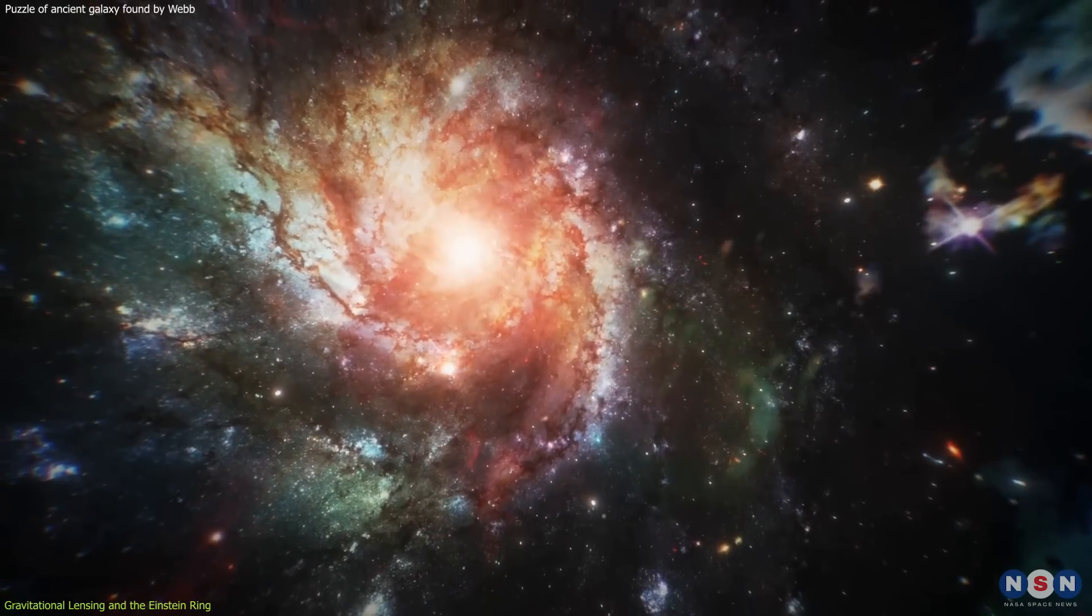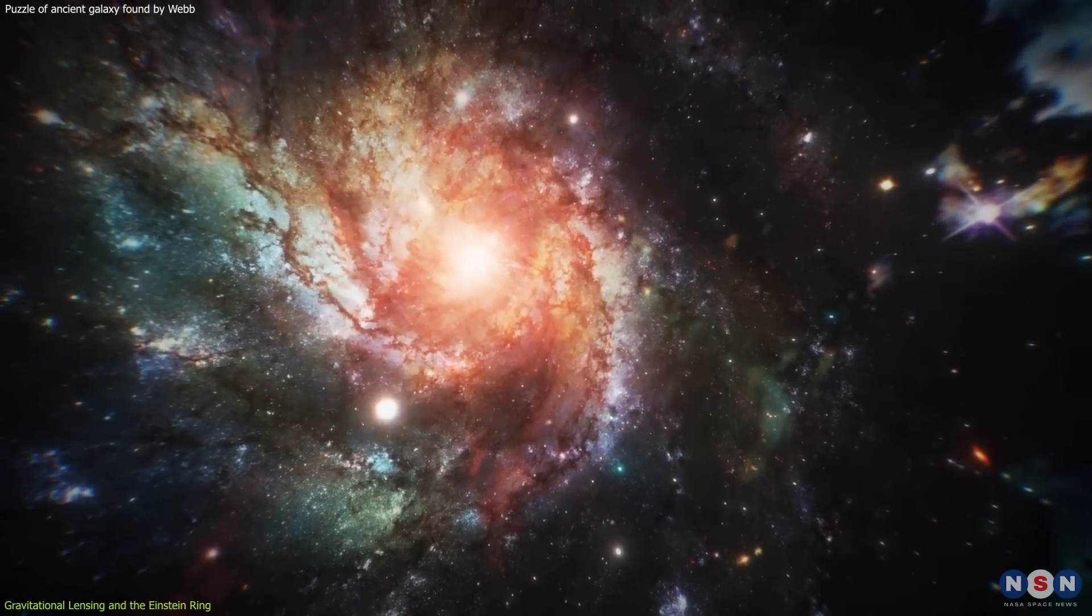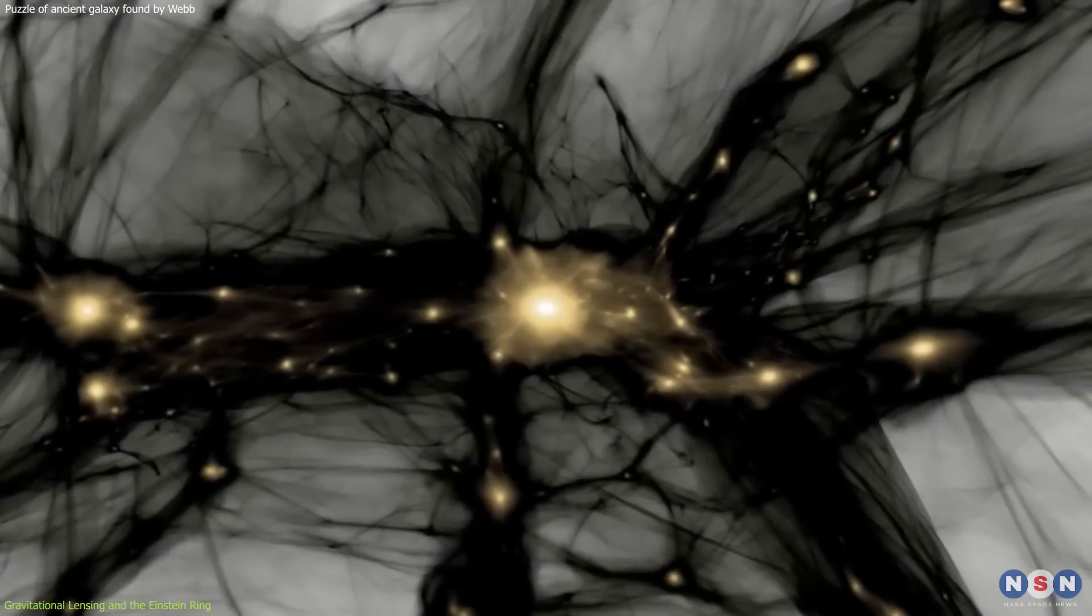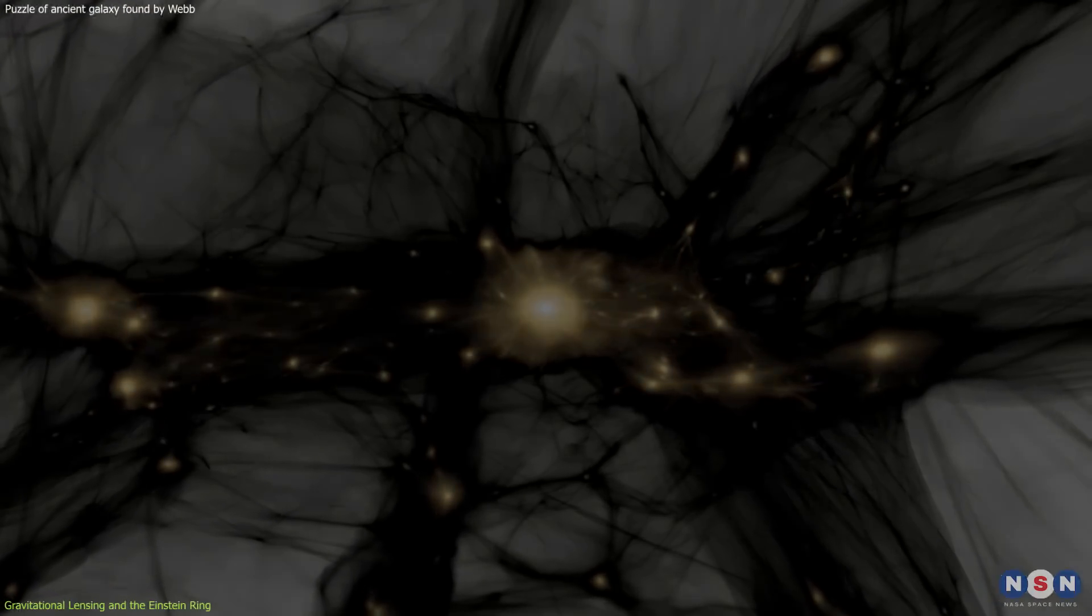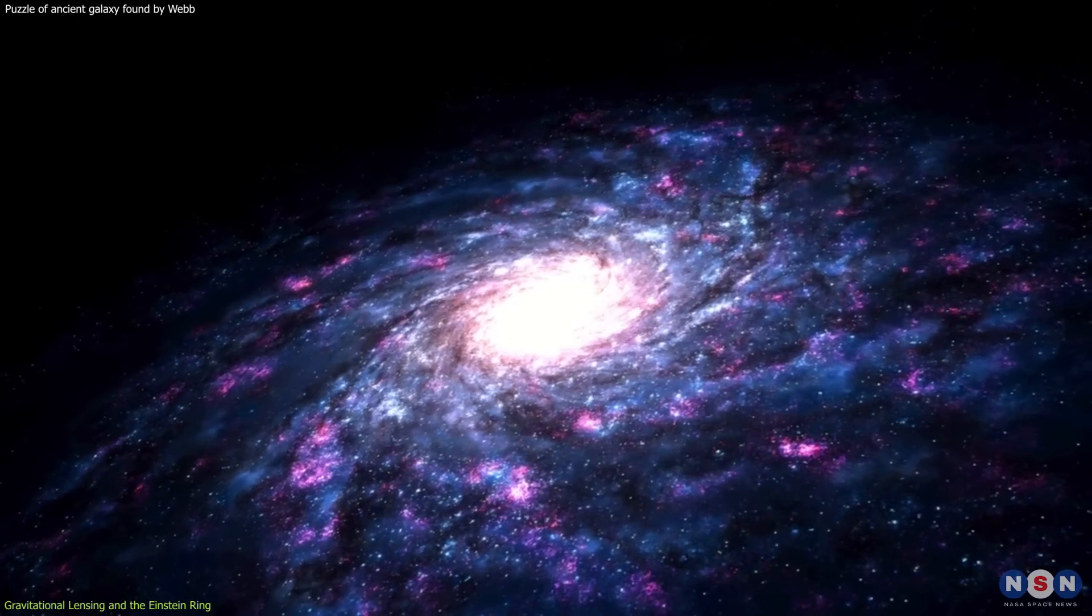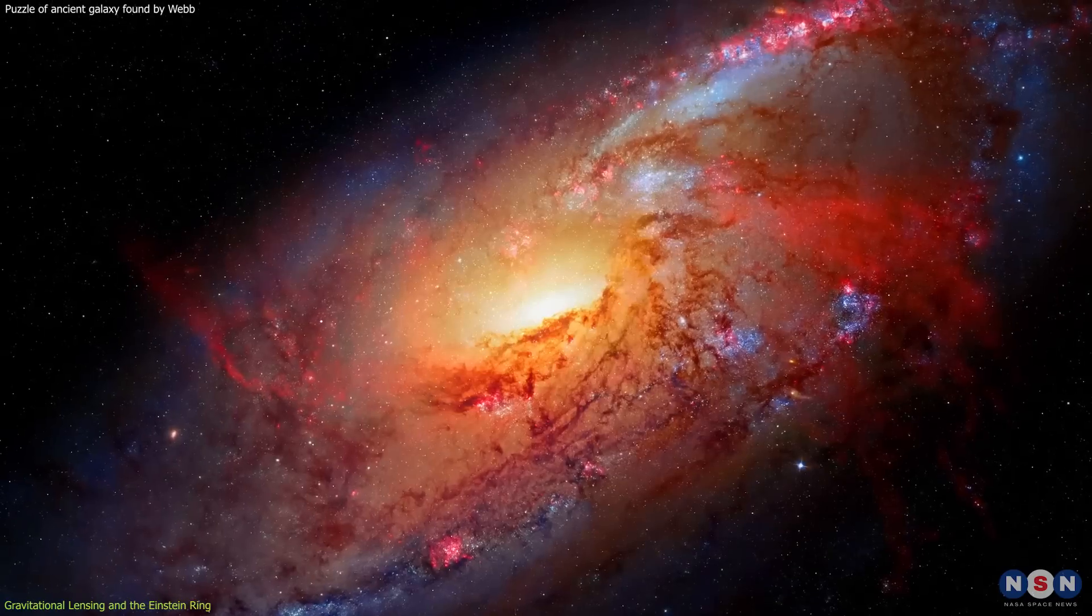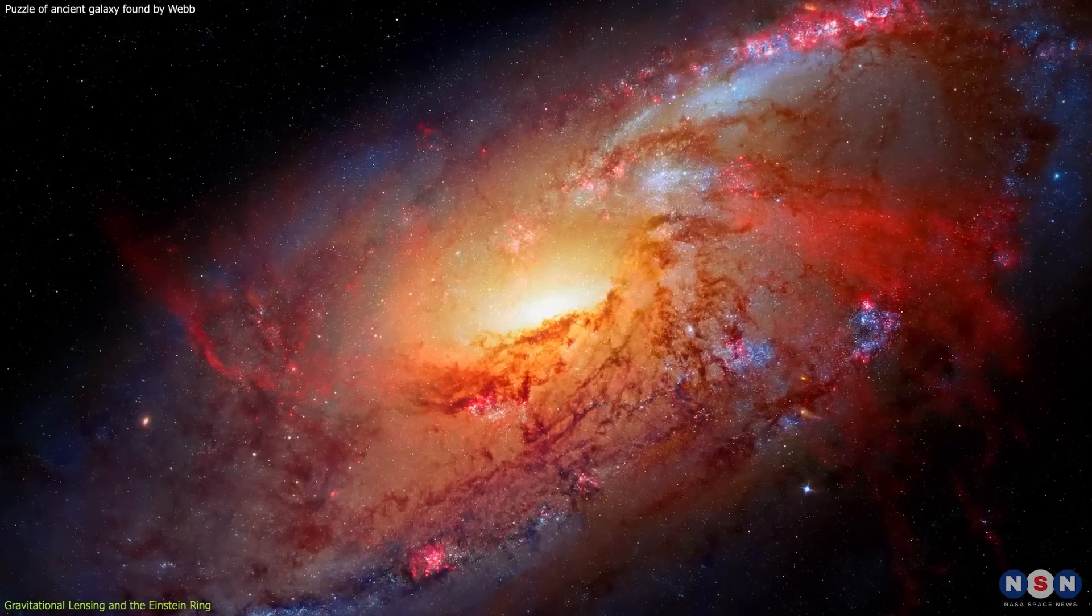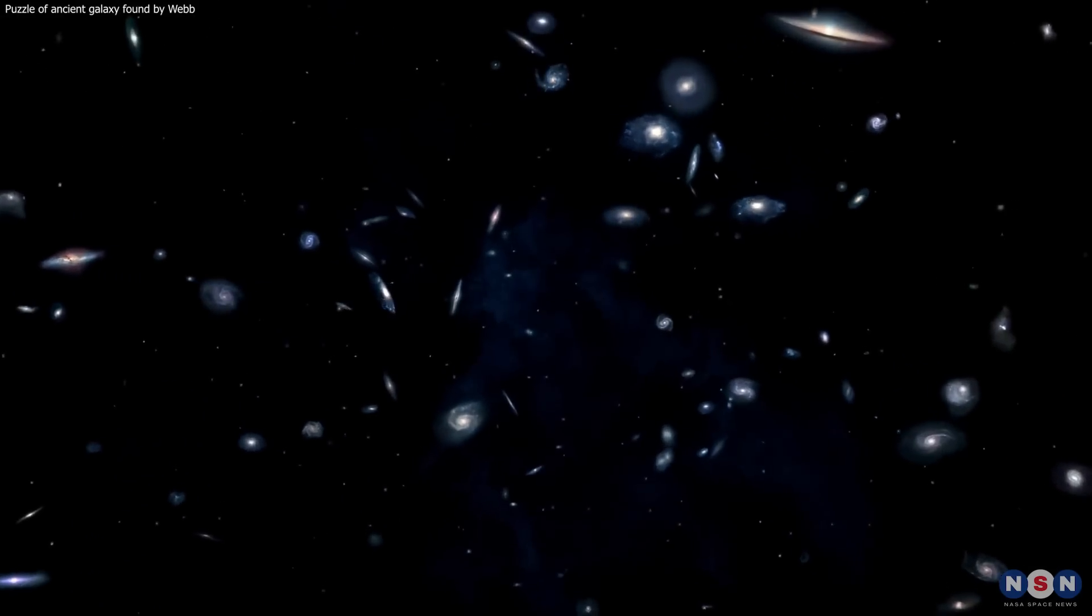By studying this system, astronomers can dissect the distribution of both visible and dark matter within the galaxy. This analysis is crucial because it helps to refine models of mass distribution in galaxies, which is essential for understanding both galaxy evolution and the overall structure of the universe.